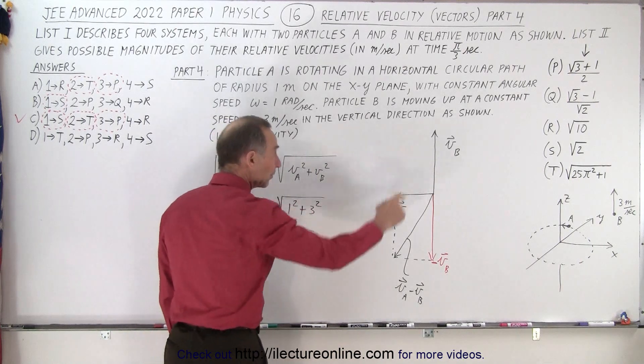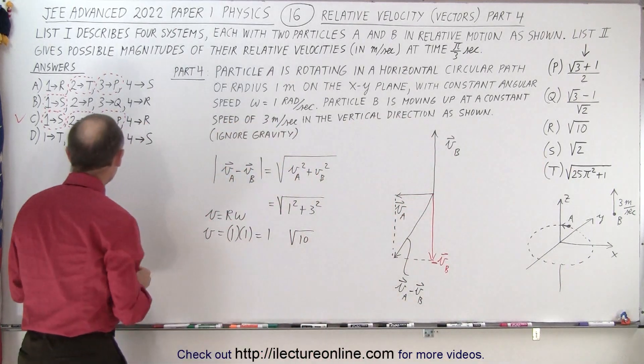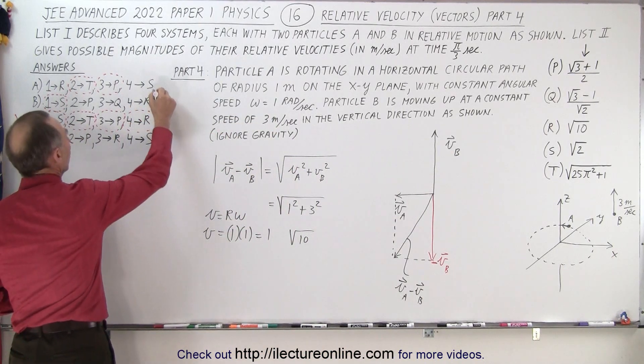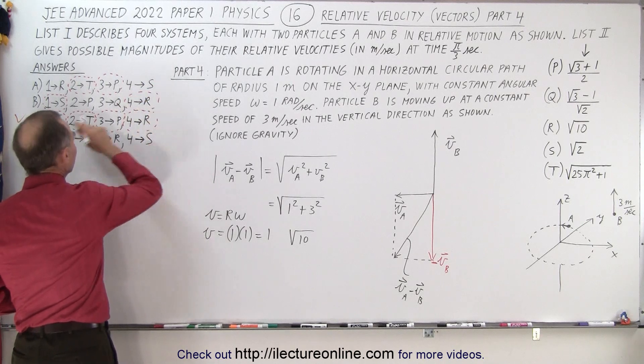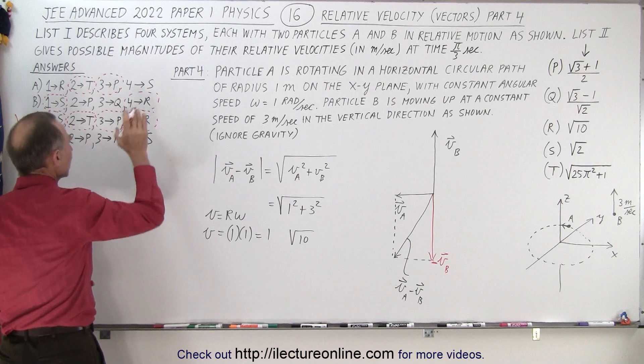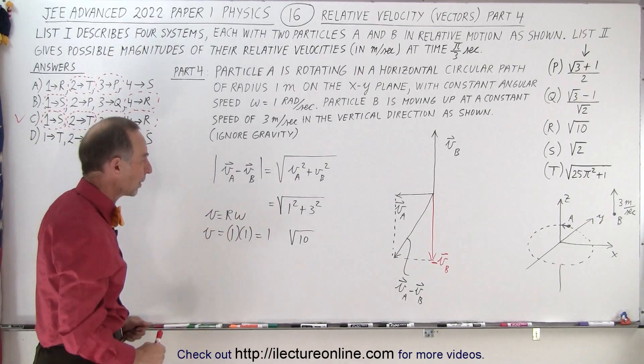And notice it is one of the answers. It is answer R. And then coming back over here, we can see that yes, for part 4, R would either be this or this. And you can see that there's only one answer that has all four parts correct, S, T, P, and R. Those were the answers that we found for the four parts of this particular problem.